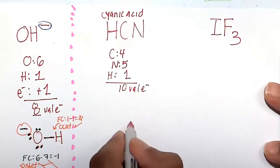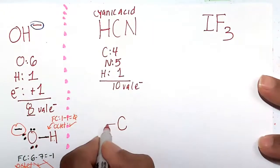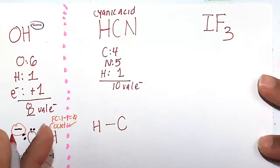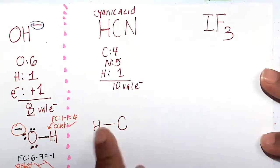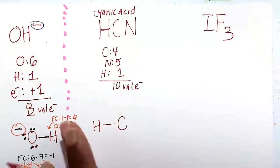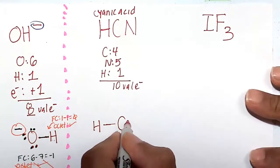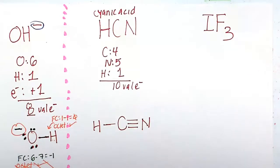So let's make carbon our central atom because carbon, no matter what, loves 4. So we'll put one bond to the hydrogen. We have no other choice than to make a triple bond with the nitrogen. There's no way hydrogen can accommodate a double bond, let alone a triple bond.